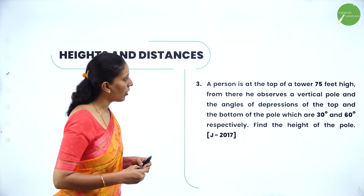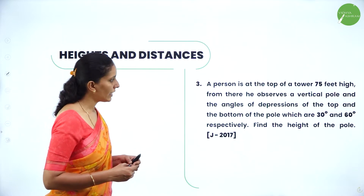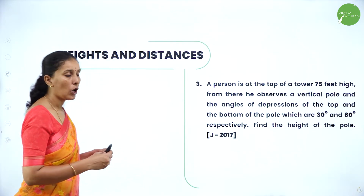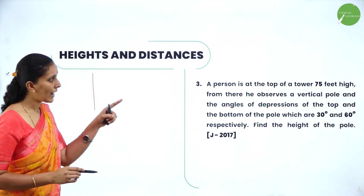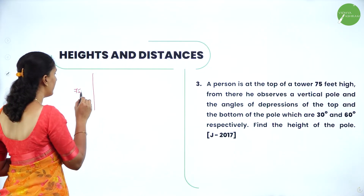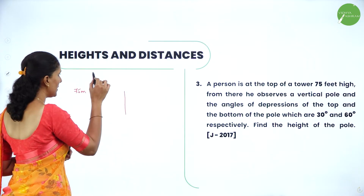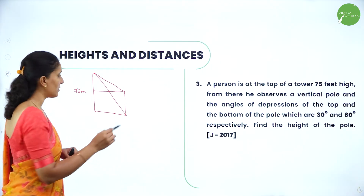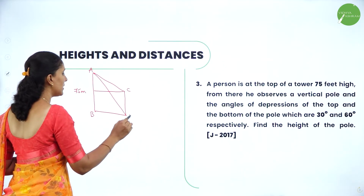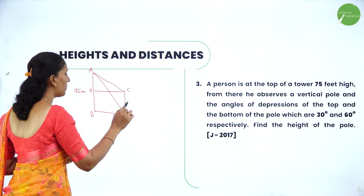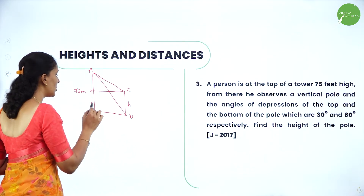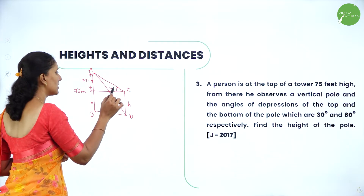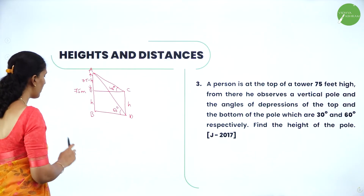Next question: A person is at the top of a tower 75 meters high. From there, he observes a vertical pole at angles of depression of 45° and 60°. Find the height of the pole. The person is standing at the tower whose height is 75 meters. He observes both the top and bottom of the pole. Let me draw two parallel lines and name the points A, B, C, D, E. Let the height of the pole be H, so this distance will be 75 minus H. The angle of depression to the top of the pole is 45° and to the bottom is 60°.